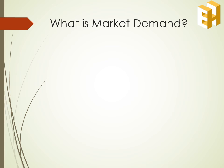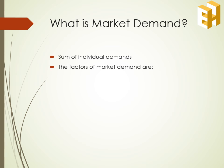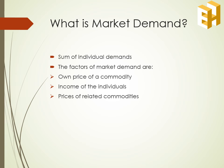After studying individual demand, let's understand market demand in detail. Market demand is the sum of individual demands. The factors which determine market demand are: first, own price of a commodity, which has a negative relationship with market demand; second, income of individuals, having a positive relationship with quantity demanded; third, price of related commodities; fourth, advertising expenditure — more the advertising expenditure, more will be the consumers influenced to consume the commodity, hence increasing the market demand.